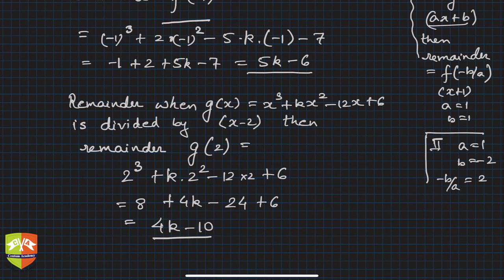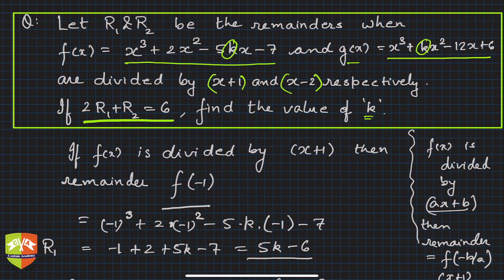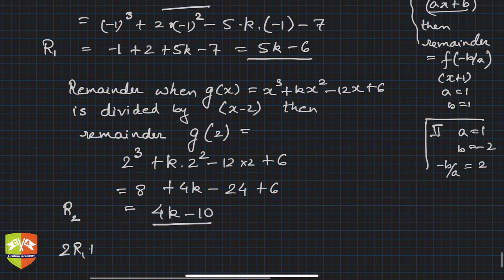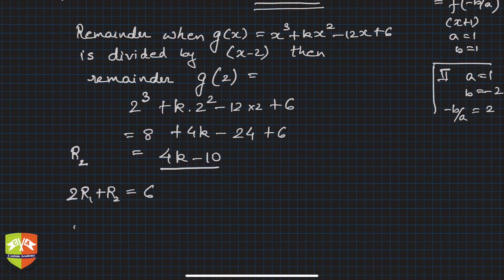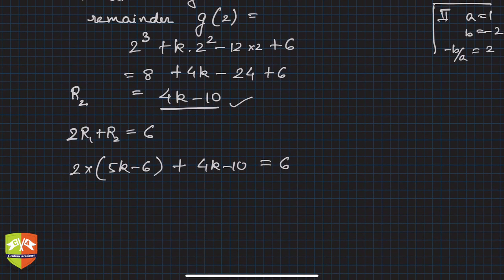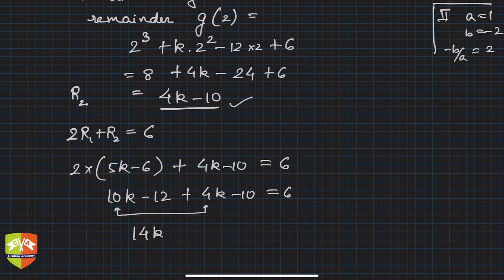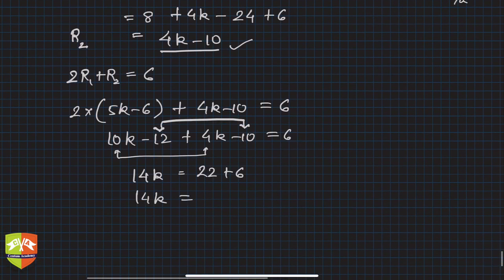Now applying the given condition 2r1 + r2 = 6: substituting, 2(5k − 6) + (4k − 10) = 6. Expanding: 10k − 12 + 4k − 10 = 6, which gives 14k − 22 = 6. So 14k = 28, therefore k = 28/14 = 2.